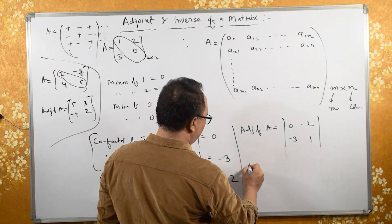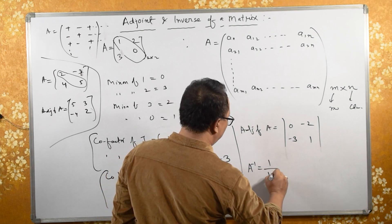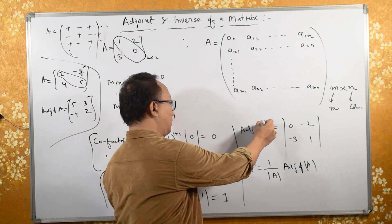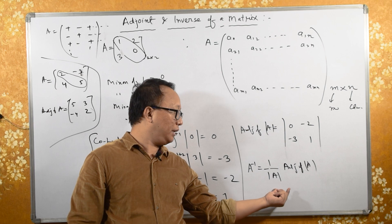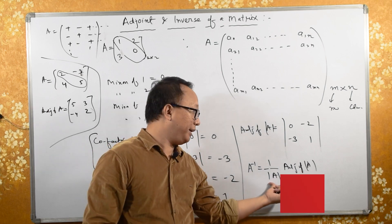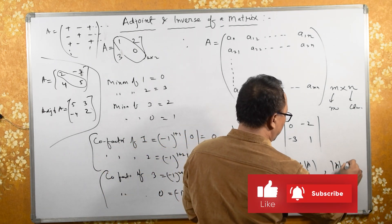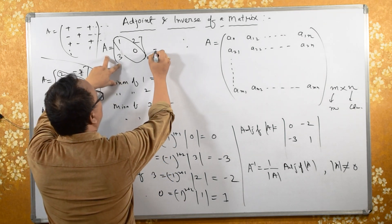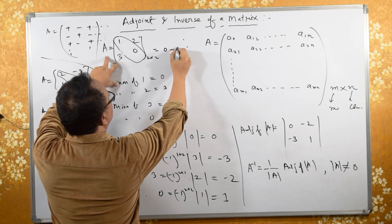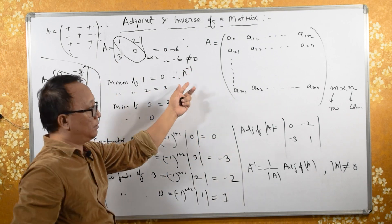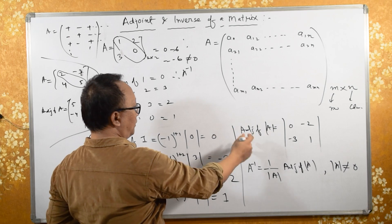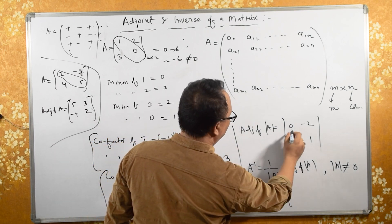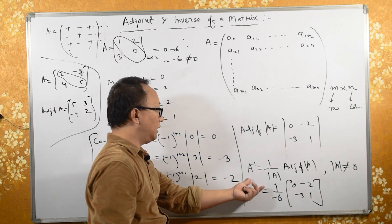Now, what is A inverse? A inverse equals 1 divided by determinant of A, multiplied by the adjoint of A. However, the determinant of A must not be equal to 0. If it is 0, then the inverse is undefined. For our 2 by 2 example, determinant A equals 1×0 minus 3×2 equals minus 6, which is not equal to 0. Therefore A inverse exists and equals (1/−6) times the adjoint matrix [0, -2; -3, 1].